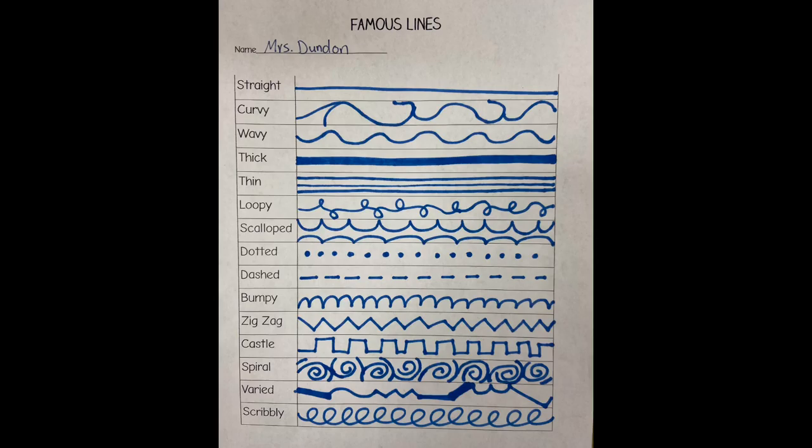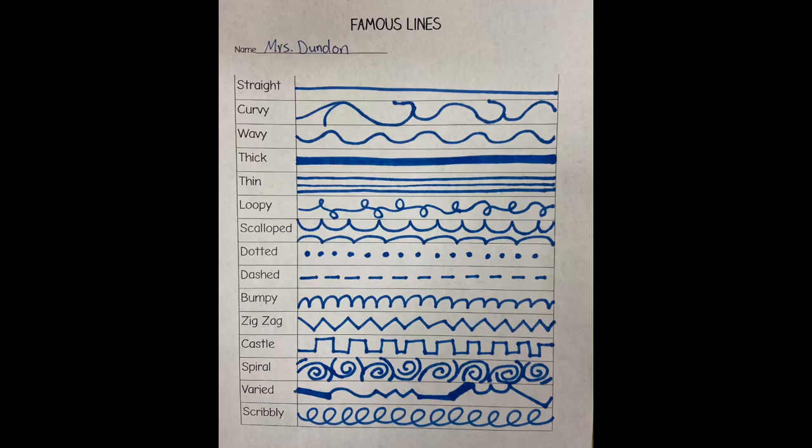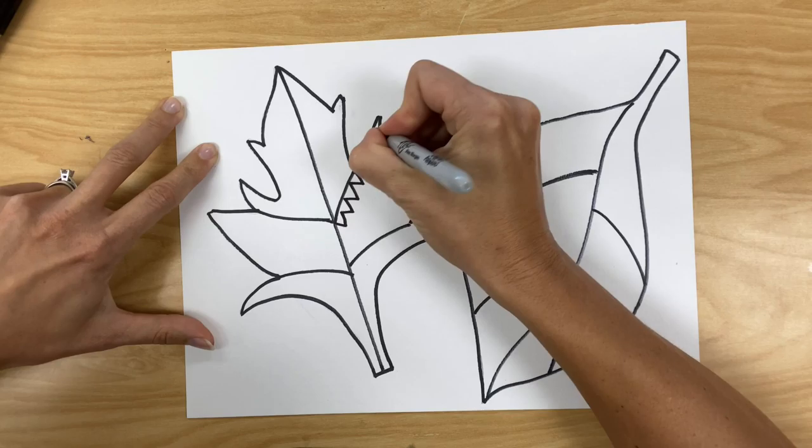After you've divided your leaves into approximately five different sections, this is when you want to think about line and different types of line. In class, face-to-face learners practice creating different types of line.